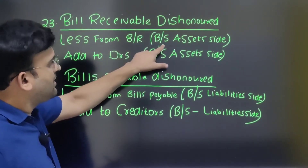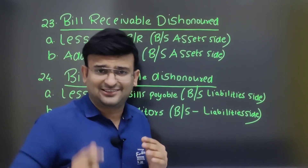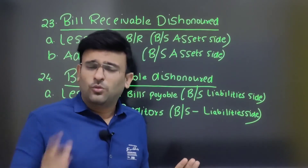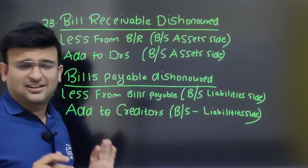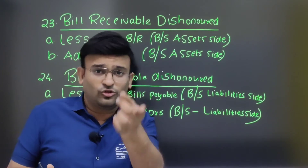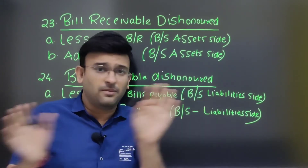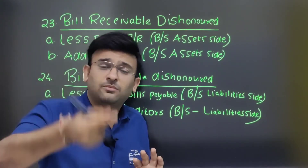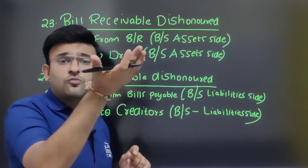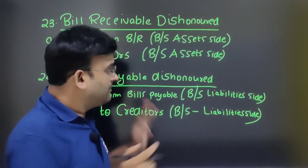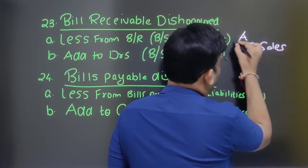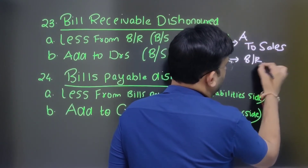Since the bill is cancelled, less from bill receivable. Bill receivable appears on balance sheet asset side. The bill has no value now, so we reduce it. But I still need to collect money from Mr. A because I sold him goods. So Mr. A becomes a debtor again — entry: Mr. A account debit to bill receivable account. Therefore: add to debtor.